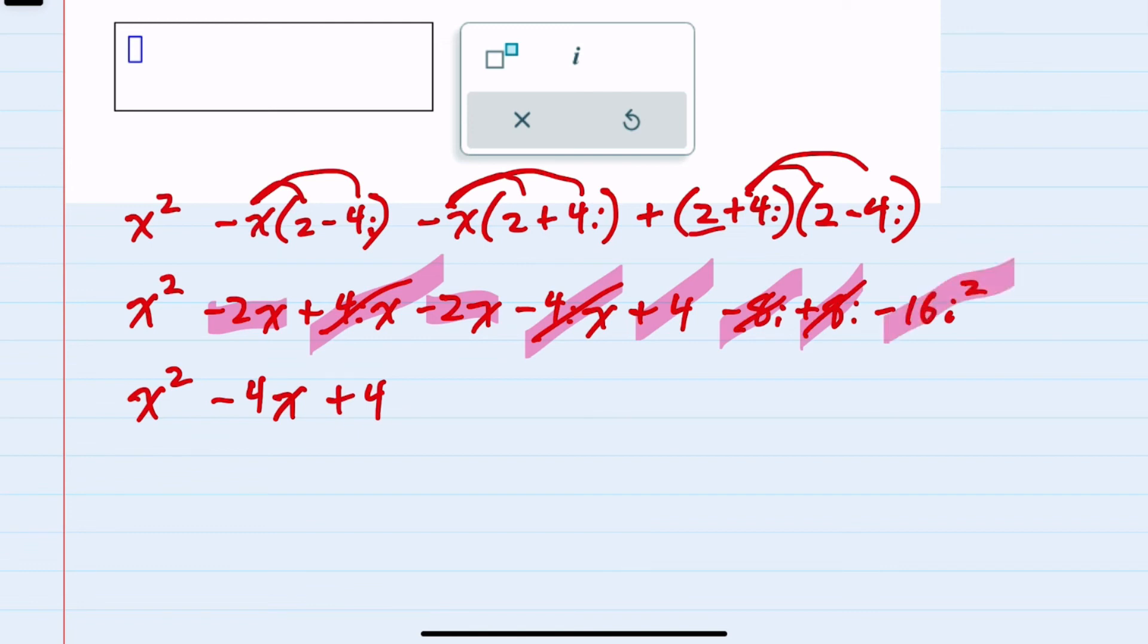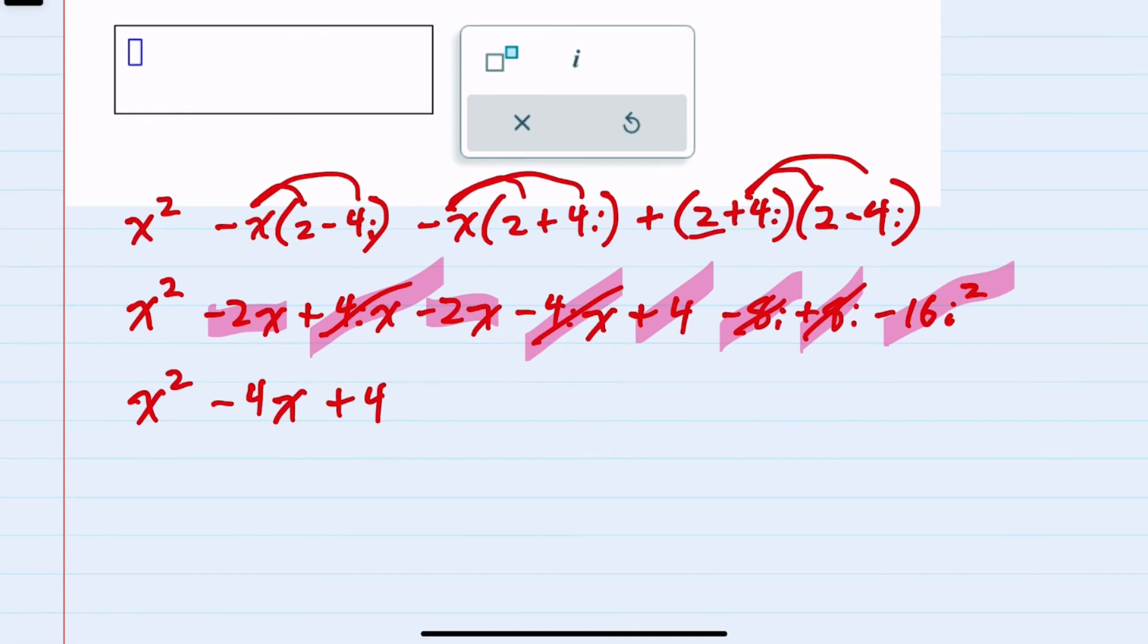We should recall that i squared is negative 1. So this is a minus 16 times negative 1 or a positive 16.